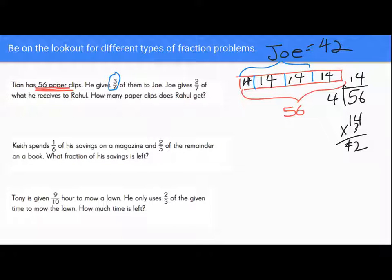But now if we look at this second problem, it says that Keith spends one-sixth of his savings on a magazine and two-fifths of the remainder on a book. We should really be cueing in and highlighting, underlining, boxing that word remainder, because that's totally going to affect how we draw our bar model.